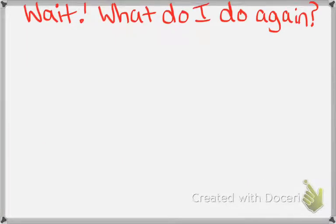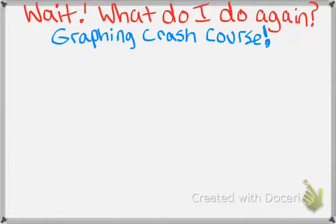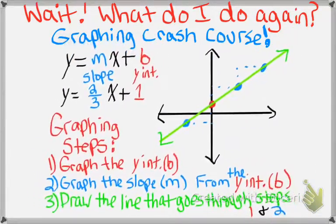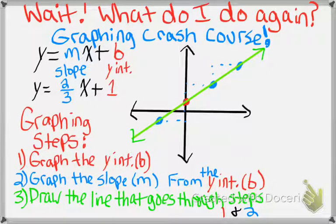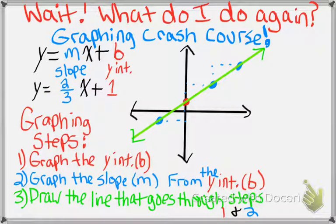If you need a refresher on graphing, here's a crash course. When you graph slope-intercept form, you identify the slope and y-intercept — those are the two pieces of information you need. First, graph the y-intercept. In this example it was 1, so go up 1 and put a dot. Then graph the slope from the y-intercept — slope was 2 over 3, so up 2 over 3. Draw your line. That's your crash course on how to graph.